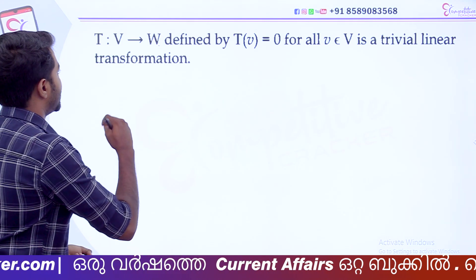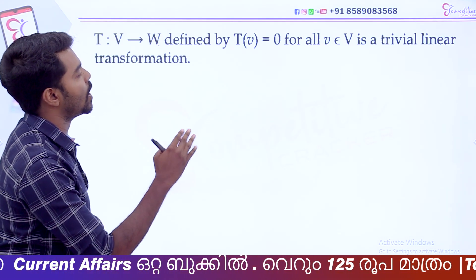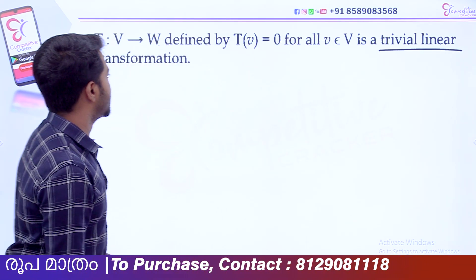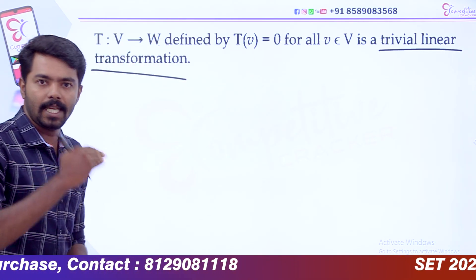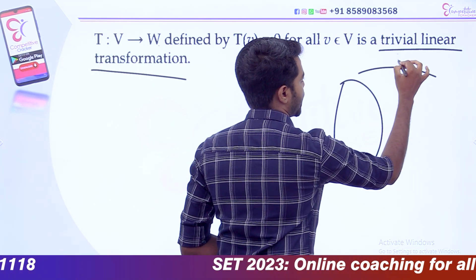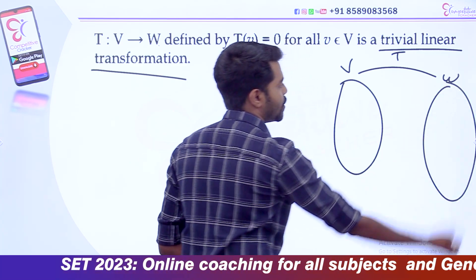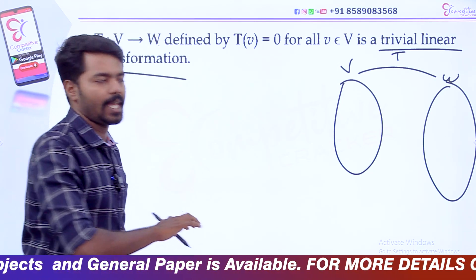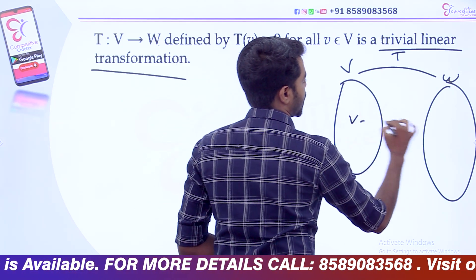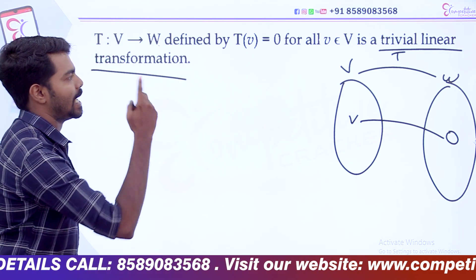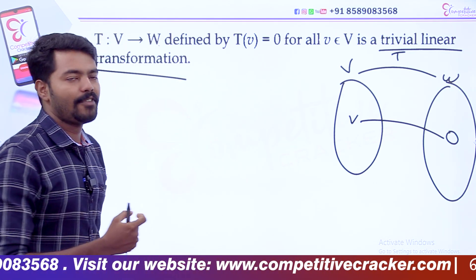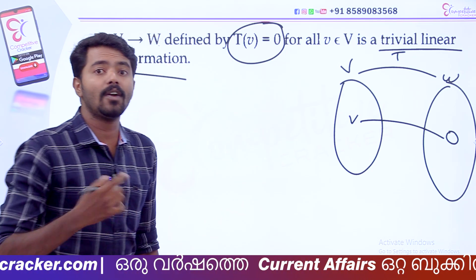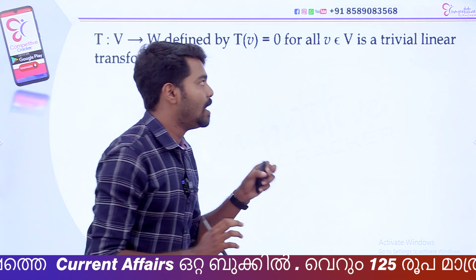Let's take our example. T from V to W, defined by T of V equals 0 for all V elements of V, is a trivial linear transformation. T is the mapping of V to W, defended by T of V equals 0 for all V elements of V. Remember: T of V equals 0 for all V elements of V is a trivial linear transformation.